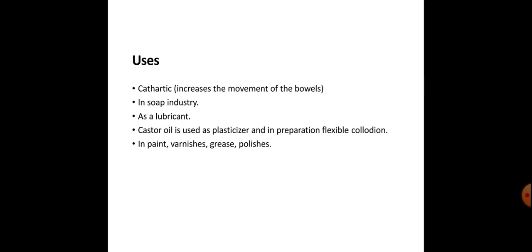Uses. Cathartic: it is used as a cathartic which increases the movement of bowels. Used in soap industry as a lubricant. Castor oil is used as a plasticizer and in preparation of flexible collodion, in paints, varnishes, grease and polishes.